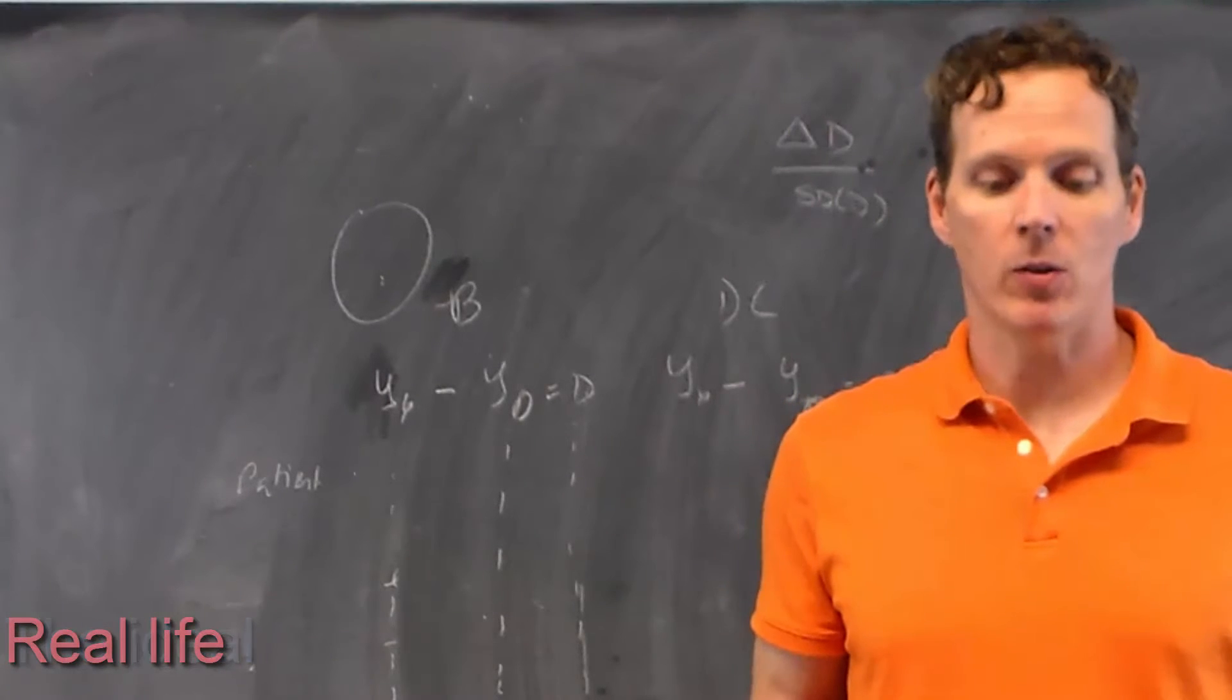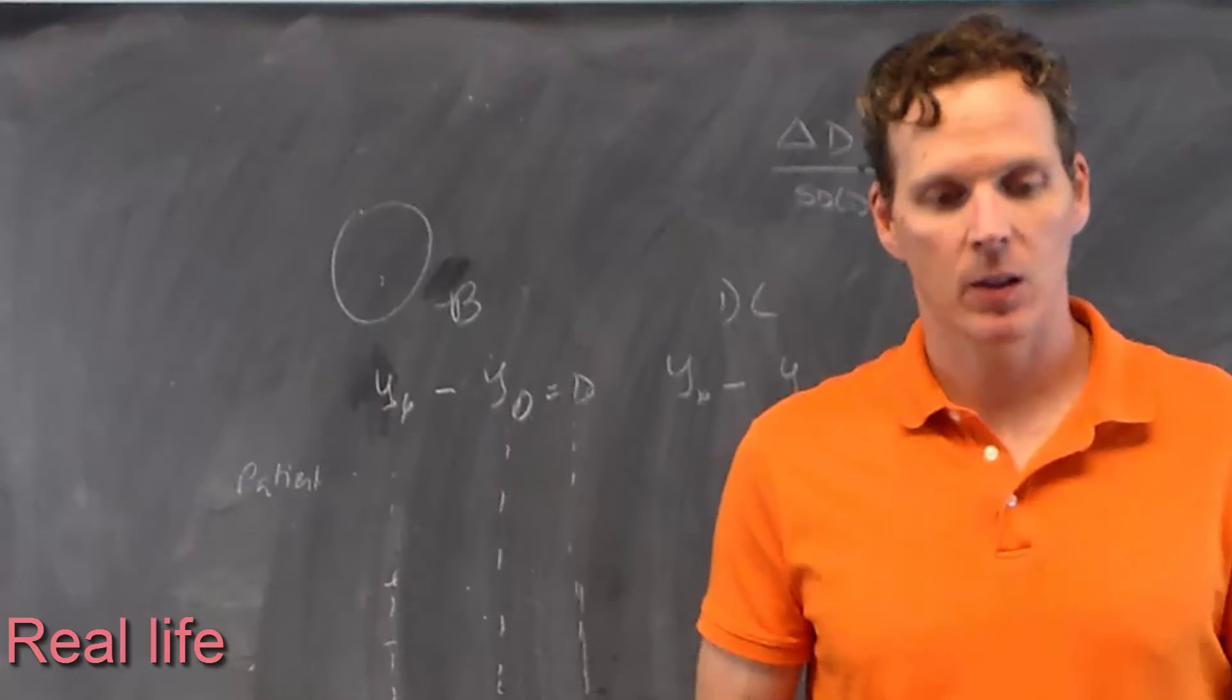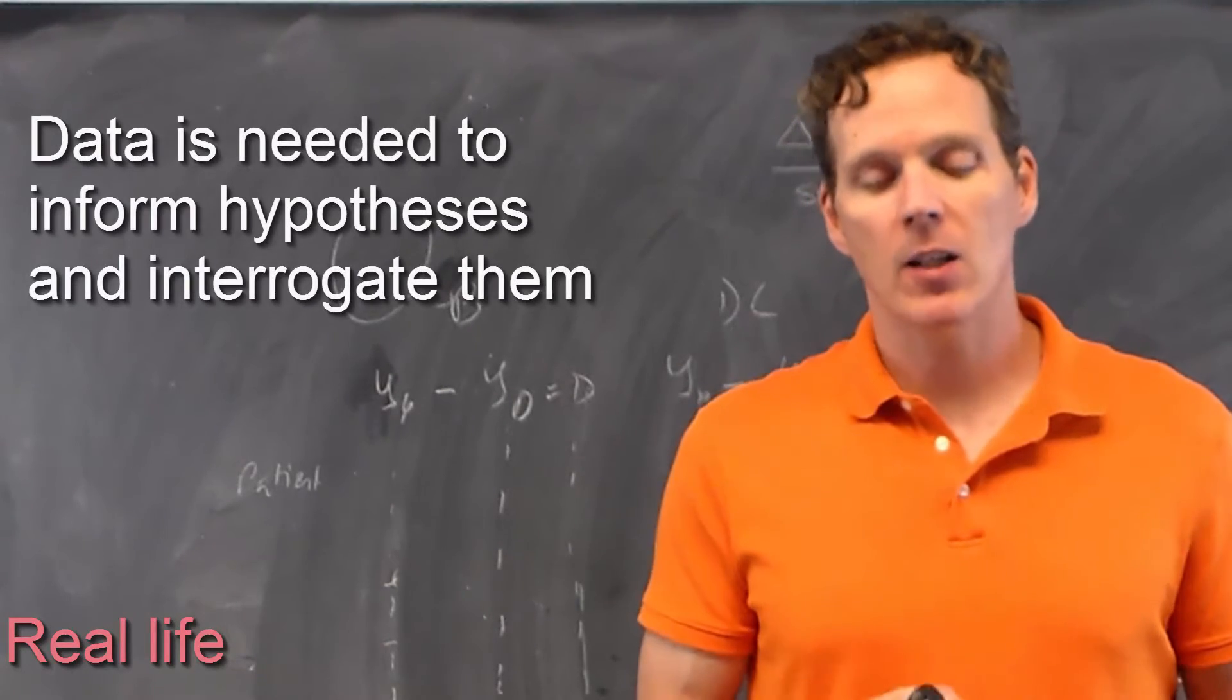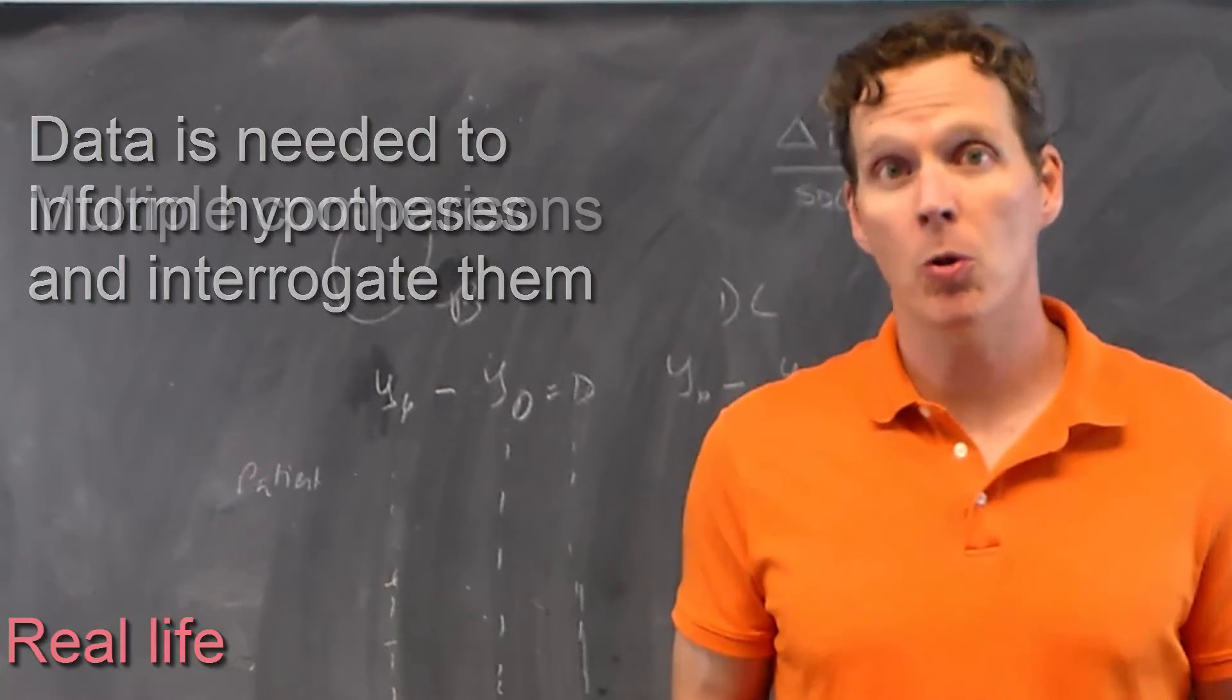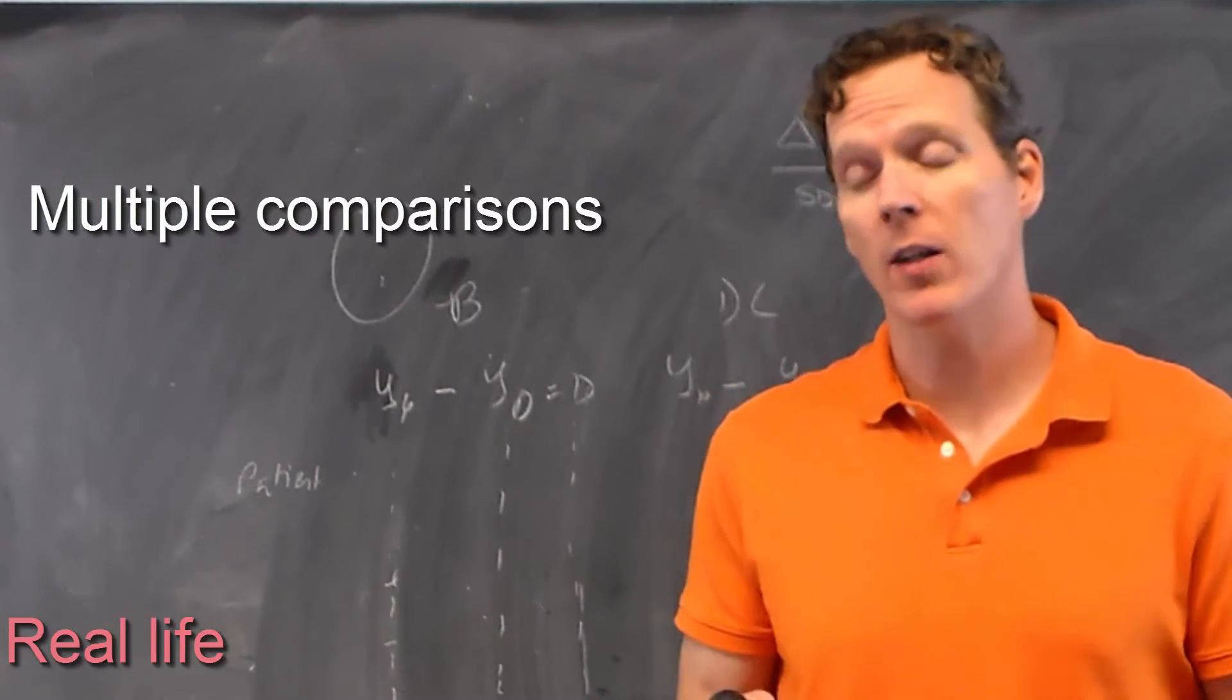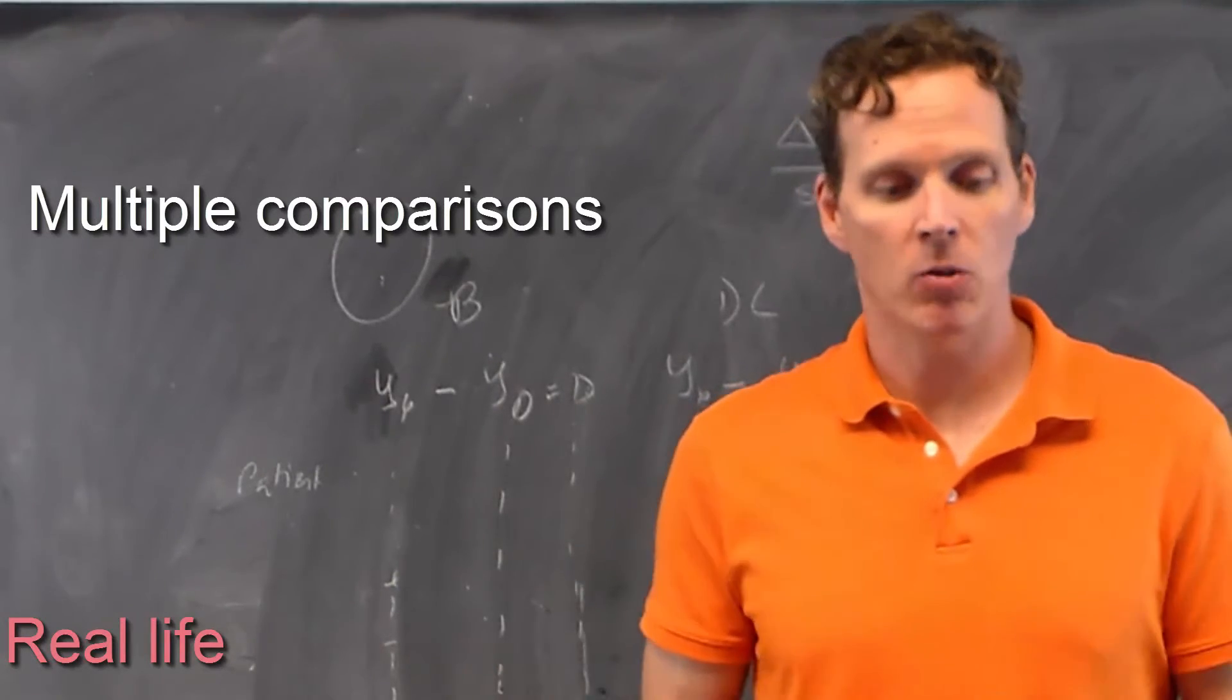What happens in real life? Well, in real life, often the data is needed to both inform the hypothesis and interrogate the hypothesis. Often multiple comparisons are an issue because you've tried several different hypotheses or you're looking at multiple things at once.